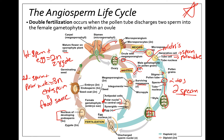Now we have a seed. A seed is going to have three things: the embryo, a food source, and an outer covering. The seed can land somewhere, and if it's a favorable environment, it will germinate into a new plant, which will develop into mature flowers.